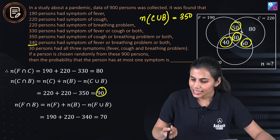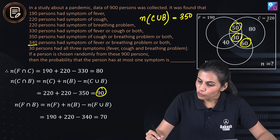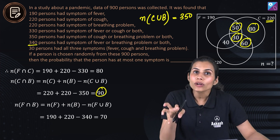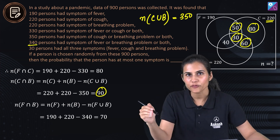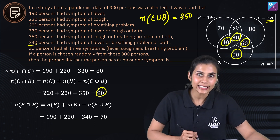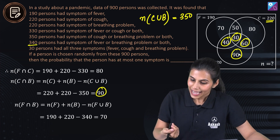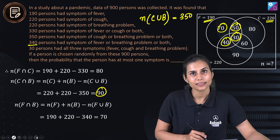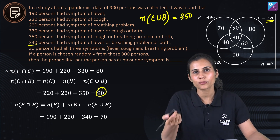Once filled up with 50, 40, 60, and 30: adding 50 + 30 = 80, plus 60 = 140 out of 220. Removing 140 from 220 leaves 80 — meaning 80 persons have only cough. Similarly, adding 40 + 30 + 60 and subtracting from 220 leaves 90 persons with only breathing problems. And adding 50 + 30 + 40 and subtracting from 190 gives 70 people with only fever symptoms.